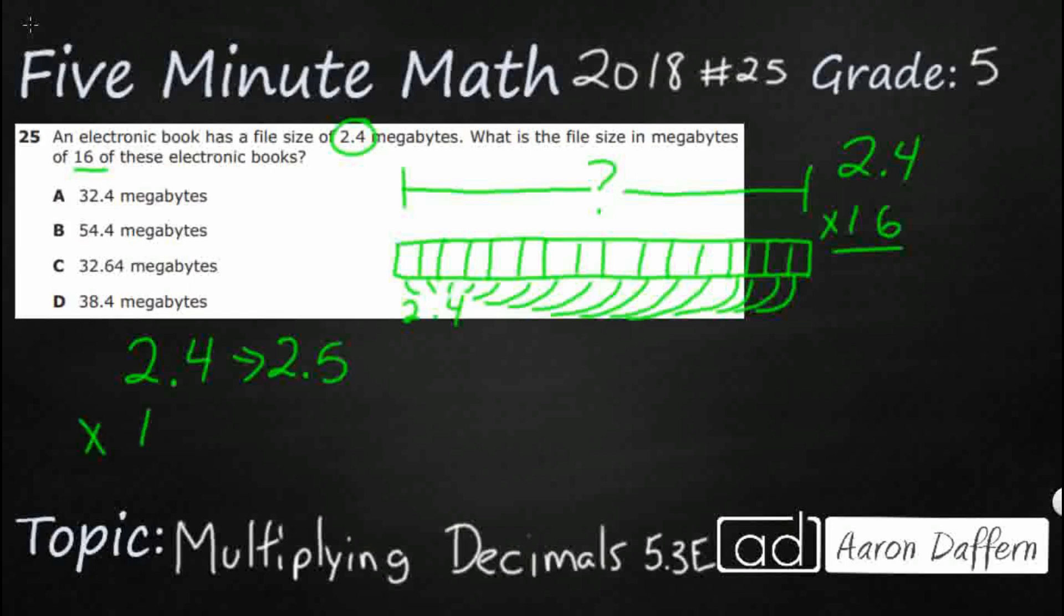And 16, I could round that up to 20. But since we're doing compatible numbers, remember numbers that are just close and easy to multiply, let's do 15. Now let me show you why this is going to work.